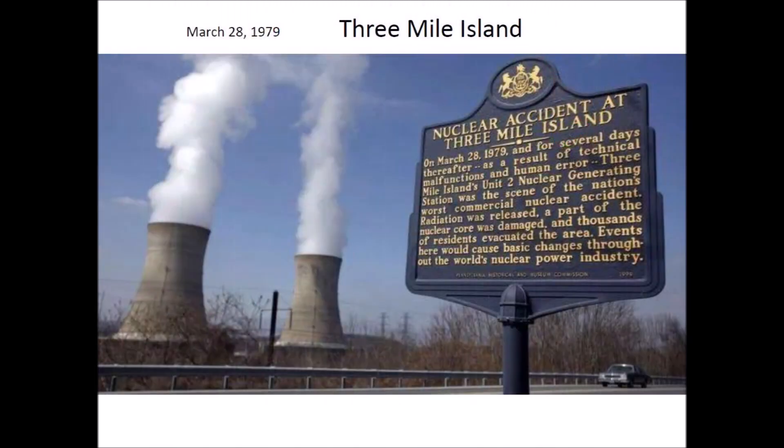Nuclear energy is sometimes touted as the energy of the future, but the long history of radiation exposure from atomic bomb tests and nuclear plant accidents is a cause for concern. On March 28, 1979, the Three Mile Island Power Plant near Middletown, Pennsylvania was the scene of the worst commercial nuclear accident in the United States, where radiation was released and thousands of residents were evacuated.